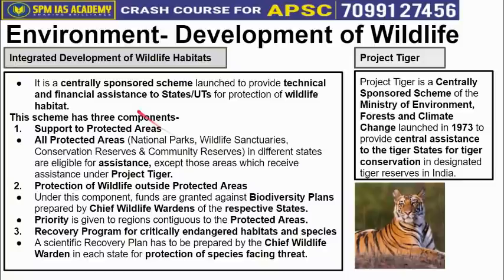The Integrated Development of Wildlife Habitat scheme has three components. The first component is Support to Protected Areas — this covers all protected areas in different states like national parks, wildlife sanctuaries, reserves, and community reserve forests. Funds are provided to protect, develop, and upgrade wildlife habitats in those areas.